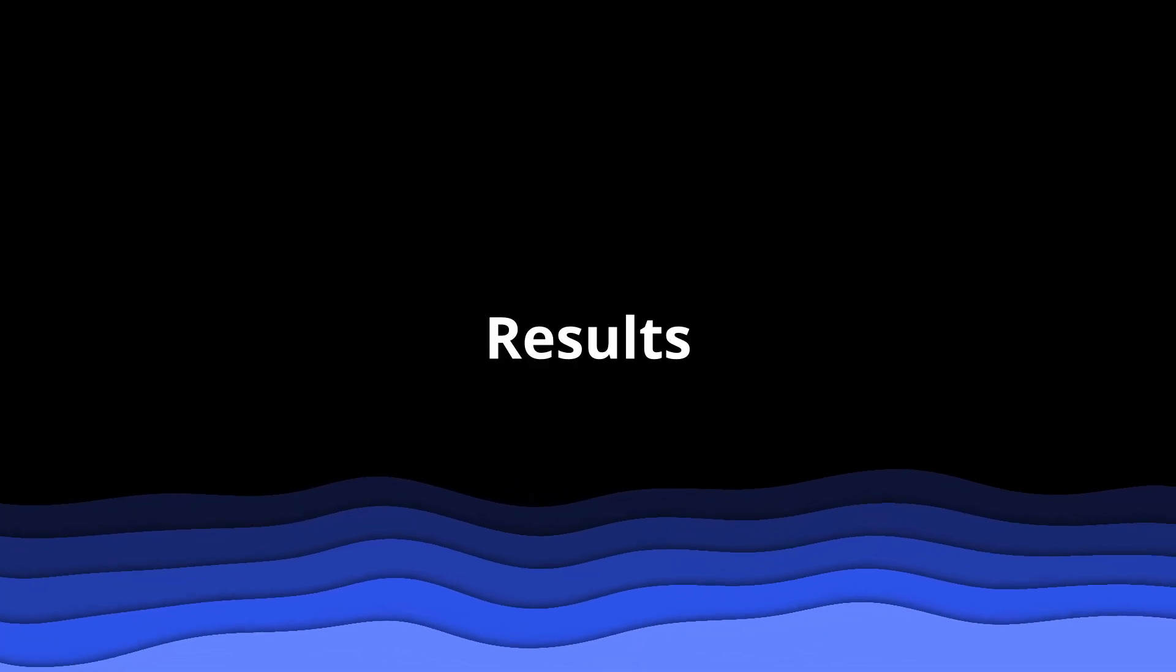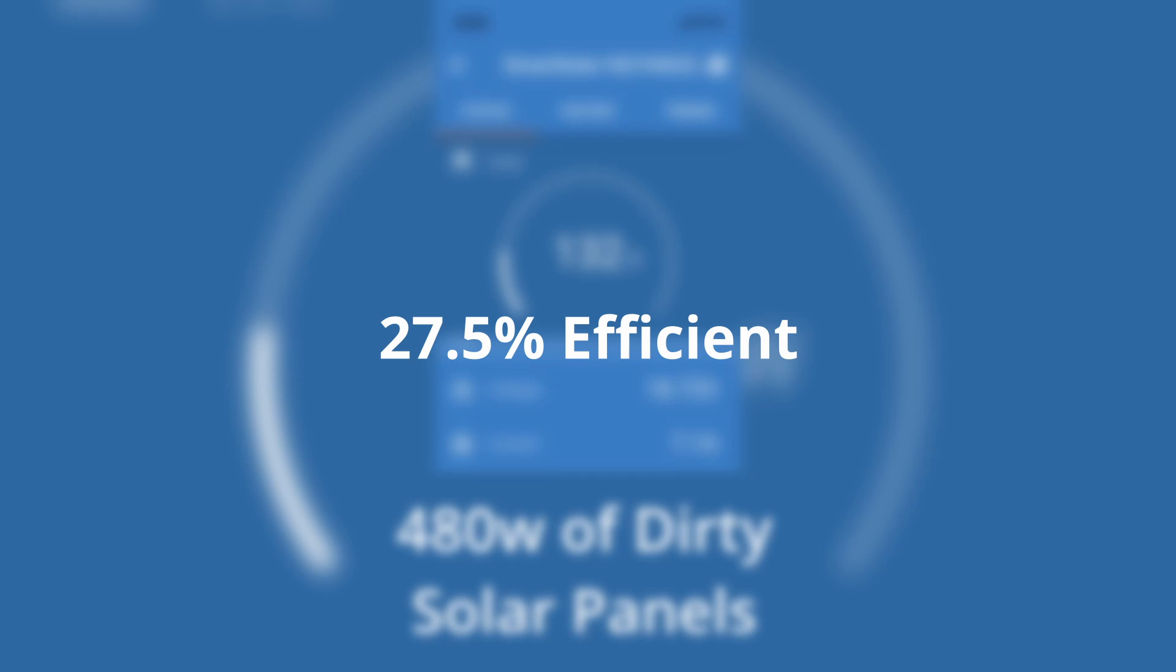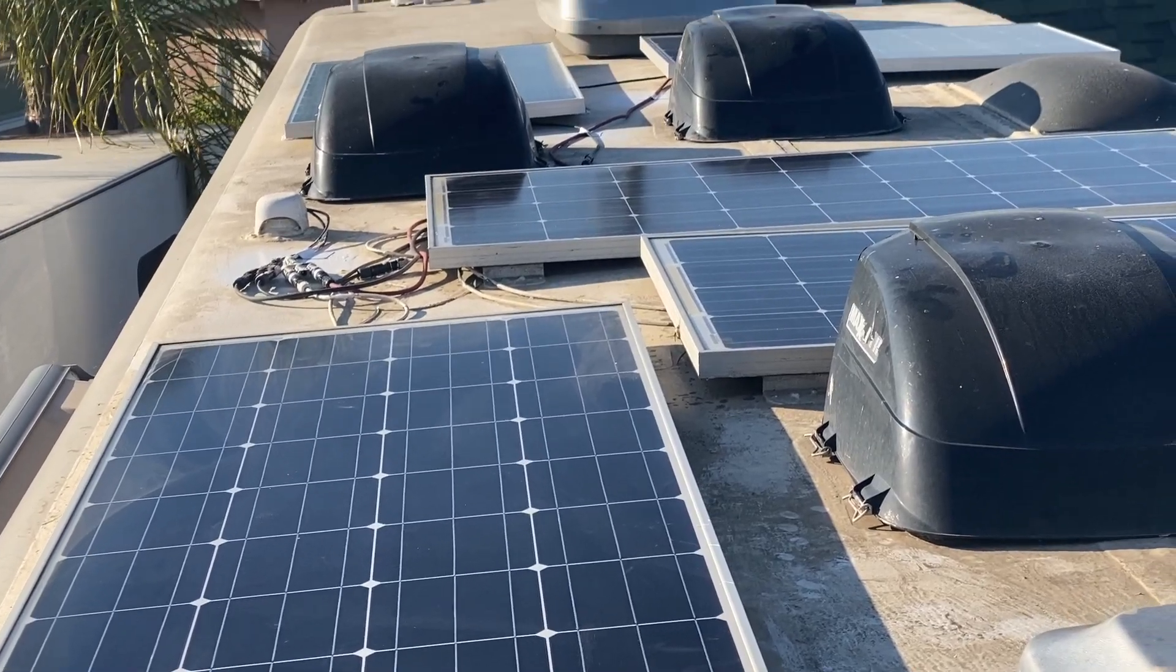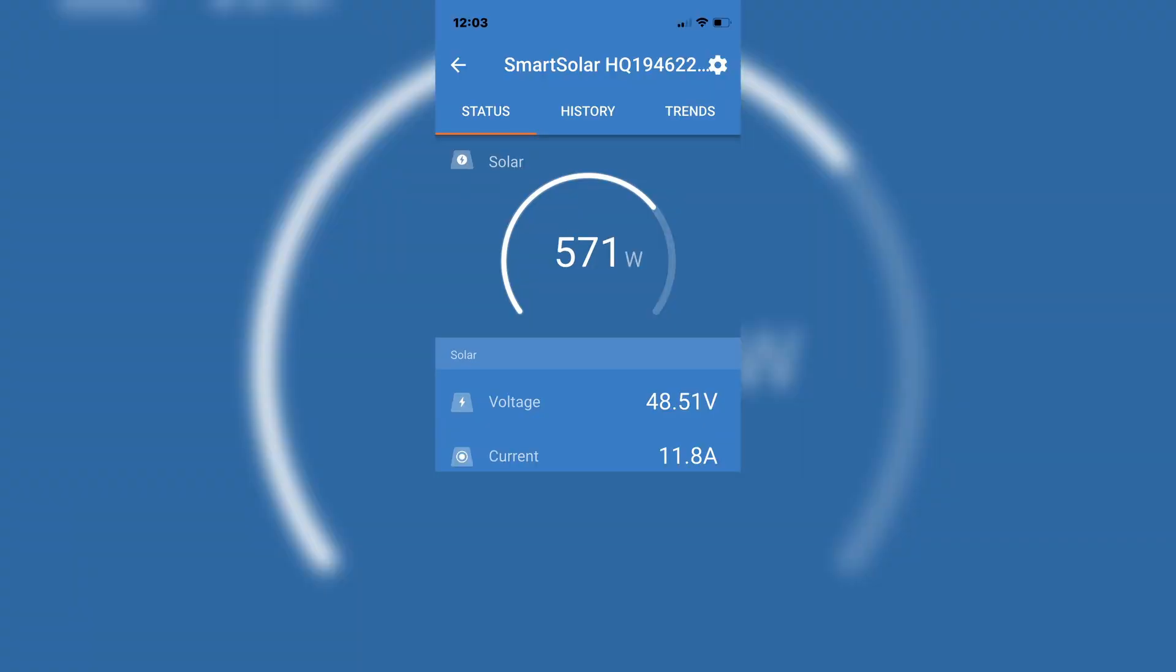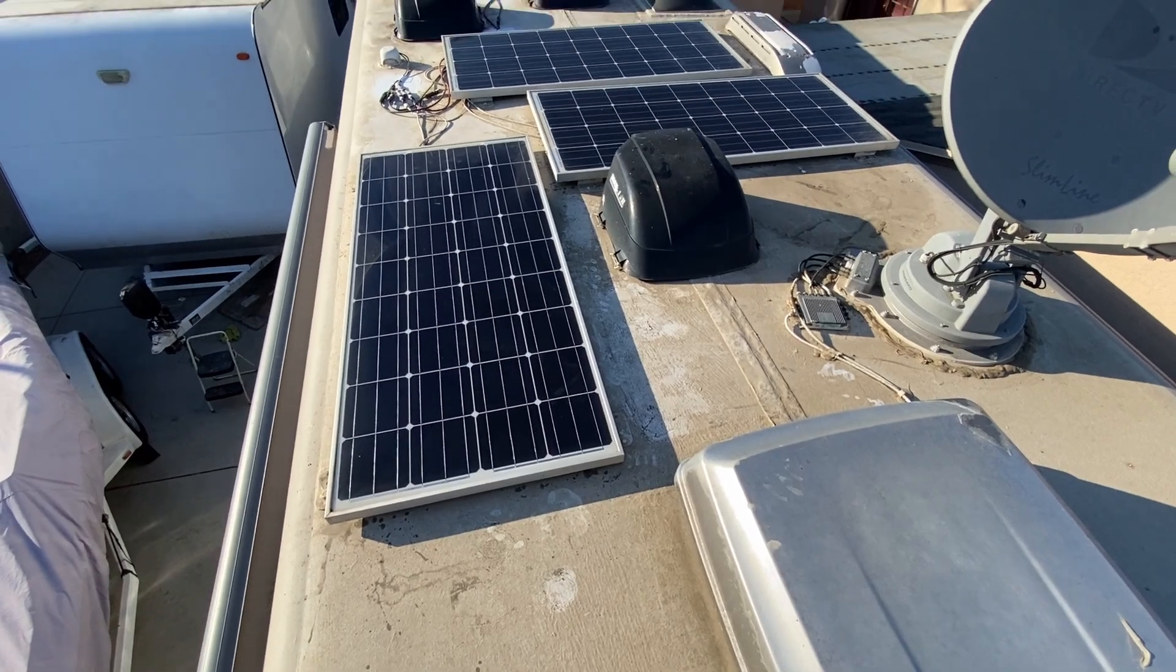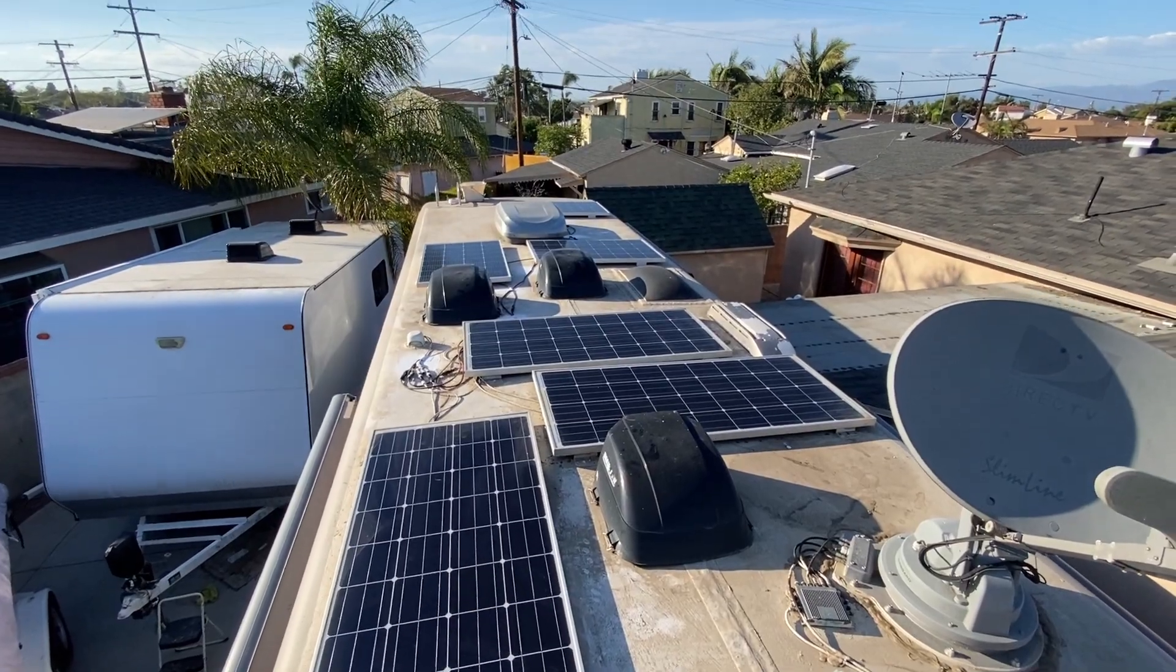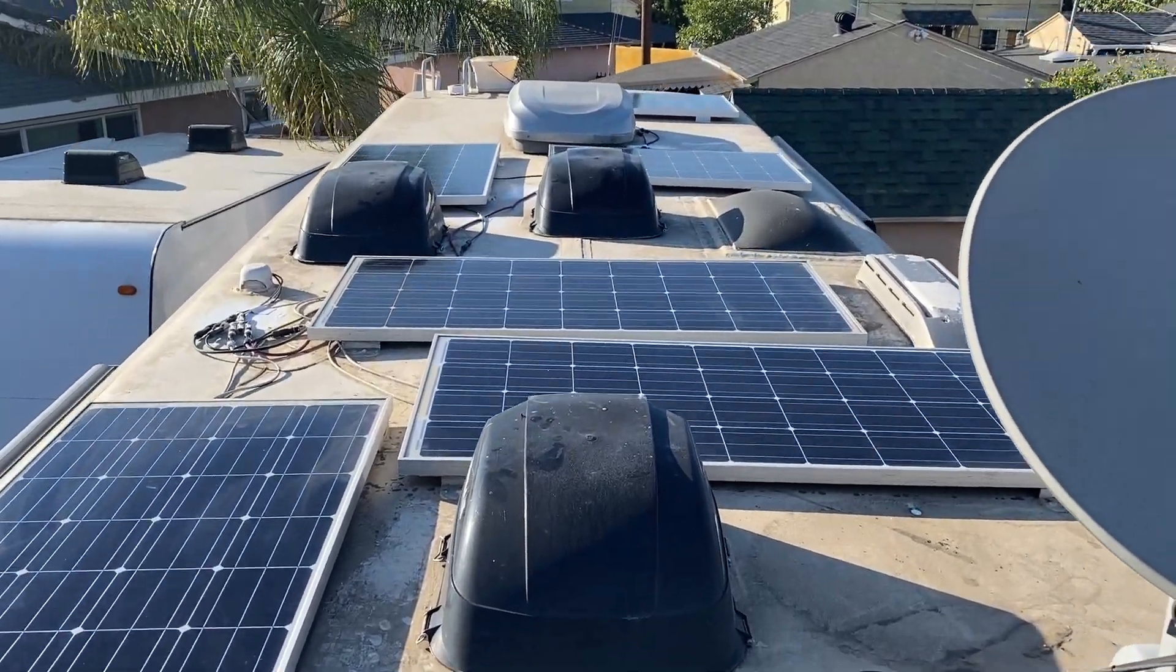So now for the results. We started with 132 watts of solar off of 480 watts of solar panels, which is about 27.5% efficient. After adding the extra panels and cleaning the existing ones, we're averaging about 571 watts off of 960 watts of panels. That's about 60% efficient and over four times what we were getting. Now the panels will produce power based on your geolocation and time of year. This was done during the fall in Los Angeles, California. So depending on where you are, you might even get better results.